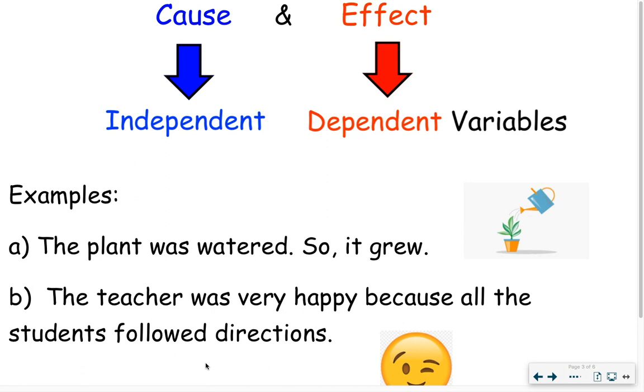For example B, the teacher was very happy because all the students follow directions. Identify the independent and the dependent variable. You can pause it again if you'd like.